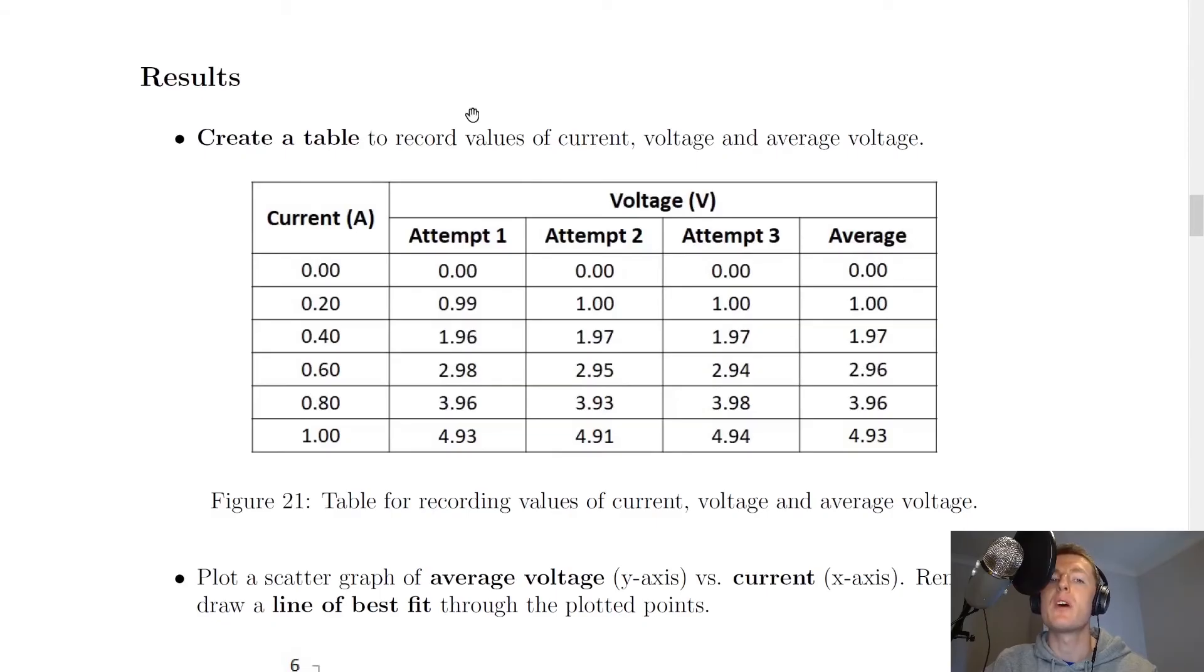So here's a sample set of results. It says create a table to record values of current, voltage, and average voltage. So you would do this during the experiment. So in this example, I've used current in amps, where we've gone up in 0.2 amp increments. And you'll see there's three attempts for voltage readings there, and then an average of all of those voltage readings. And the first reading we've taken is at 0, 0. So the average of that is obviously going to be 0.